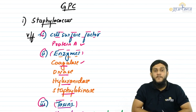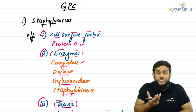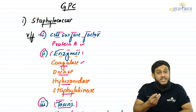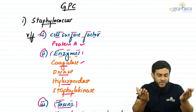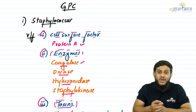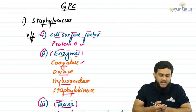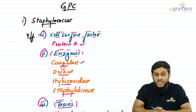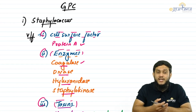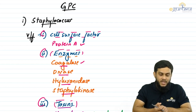Coagulase has anti-thrombin-like activity and is responsible for the production of fibrin, which forms a clot. This clot limits the spread of infection, which is why staphylococcus causes localized infection — that is, abscess. DNase, hyaluronidase, and staphylokinase are responsible for spreading infection, causing cellulitis.